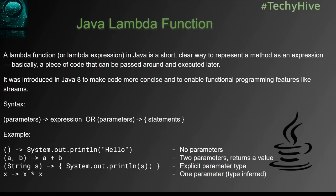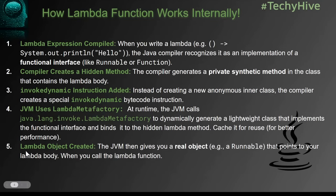Let's see how a lambda function is called by the JVM. Here are the steps. In step one, the lambda expression is compiled. When you write a lambda function like System.out.println("hello"), the Java compiler recognizes it as an implementation of a functional interface like Runnable or Function. A functional interface is an interface that has one and only one abstract method — it cannot have more than one abstract method. When the compiler sees the lambda expression, it assumes it is an implementation of a functional interface.